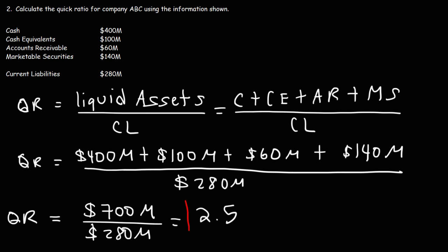So that's the quick ratio. When a quick ratio exceeds one, that's a good thing — it means that the company has enough liquid assets to pay off its current liabilities.